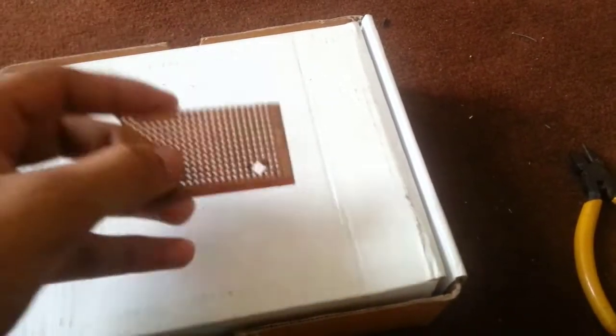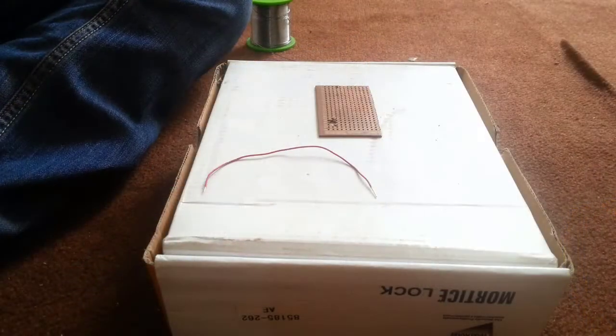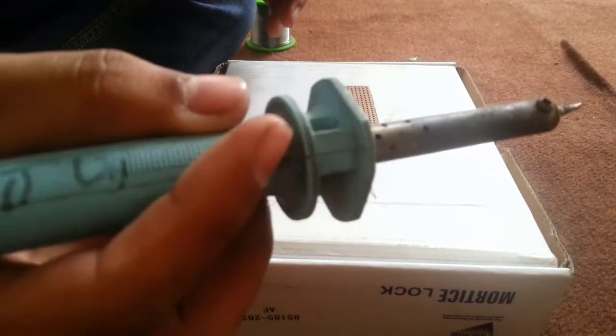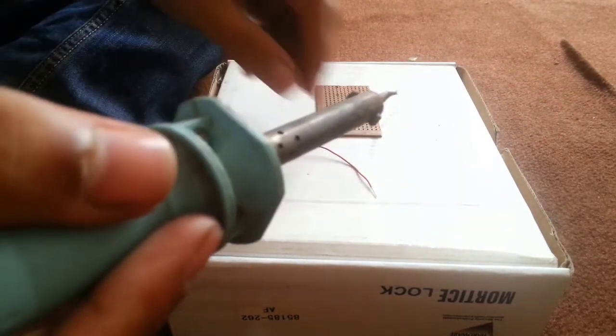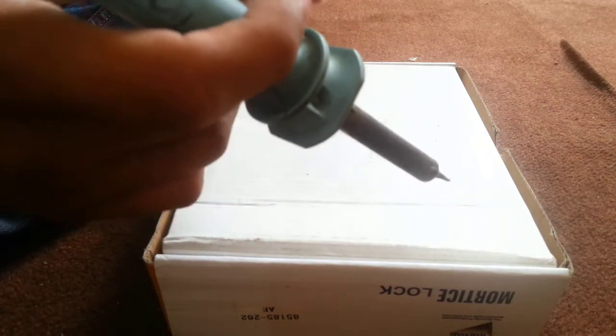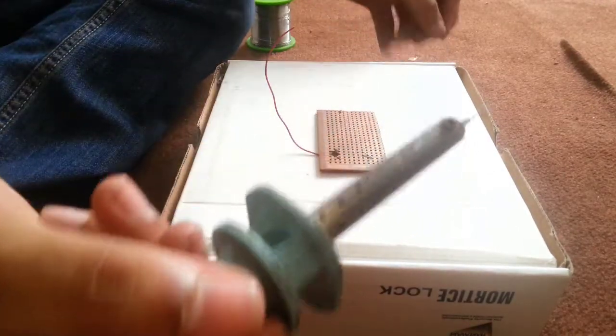To solder this wire, first heat up your solder and then put the wire from any hole and tilt it so that it's not able to move like this. Now I am going to solder on it.